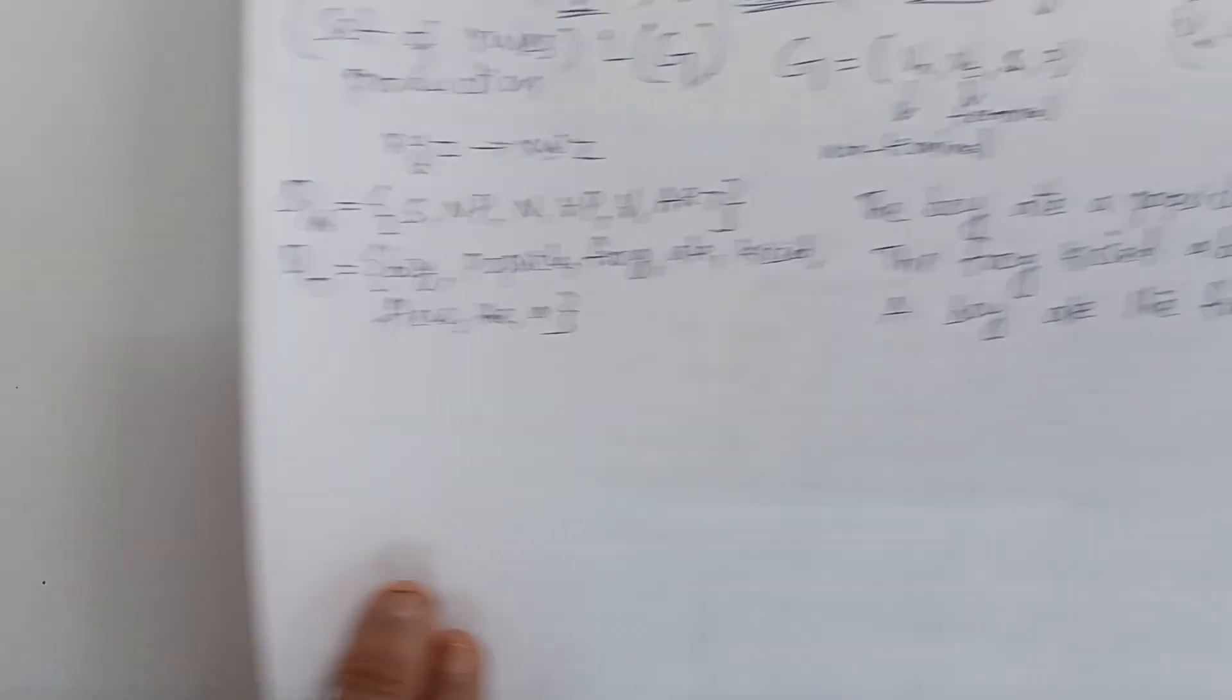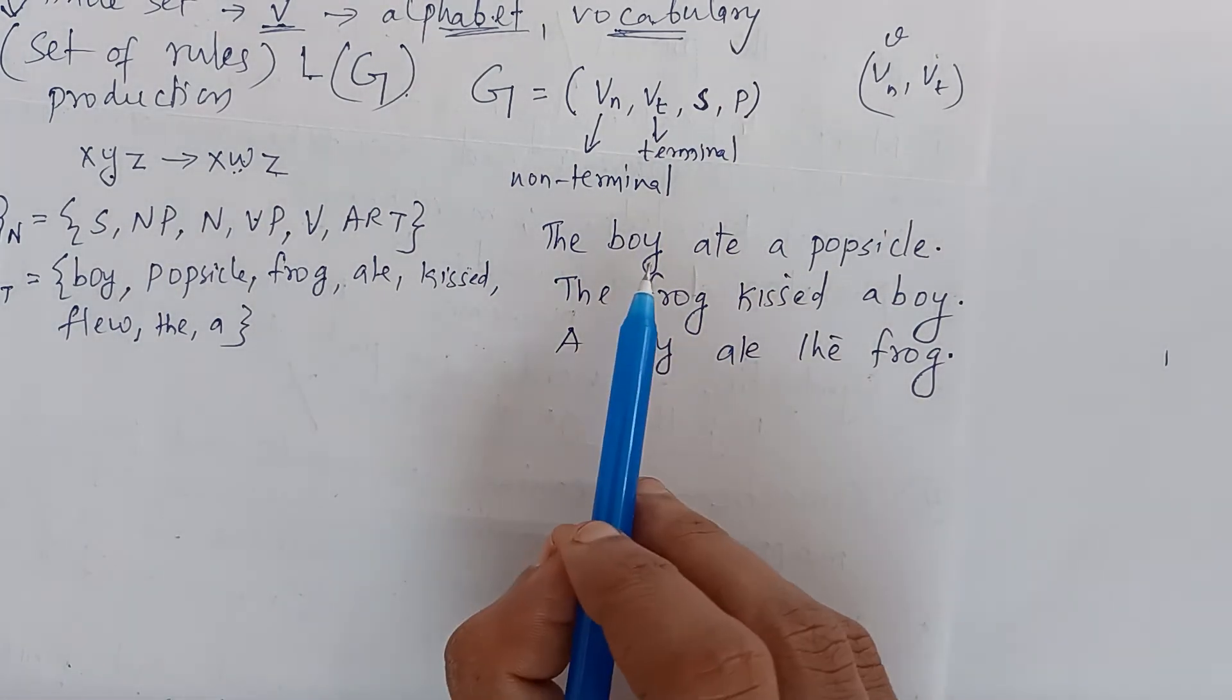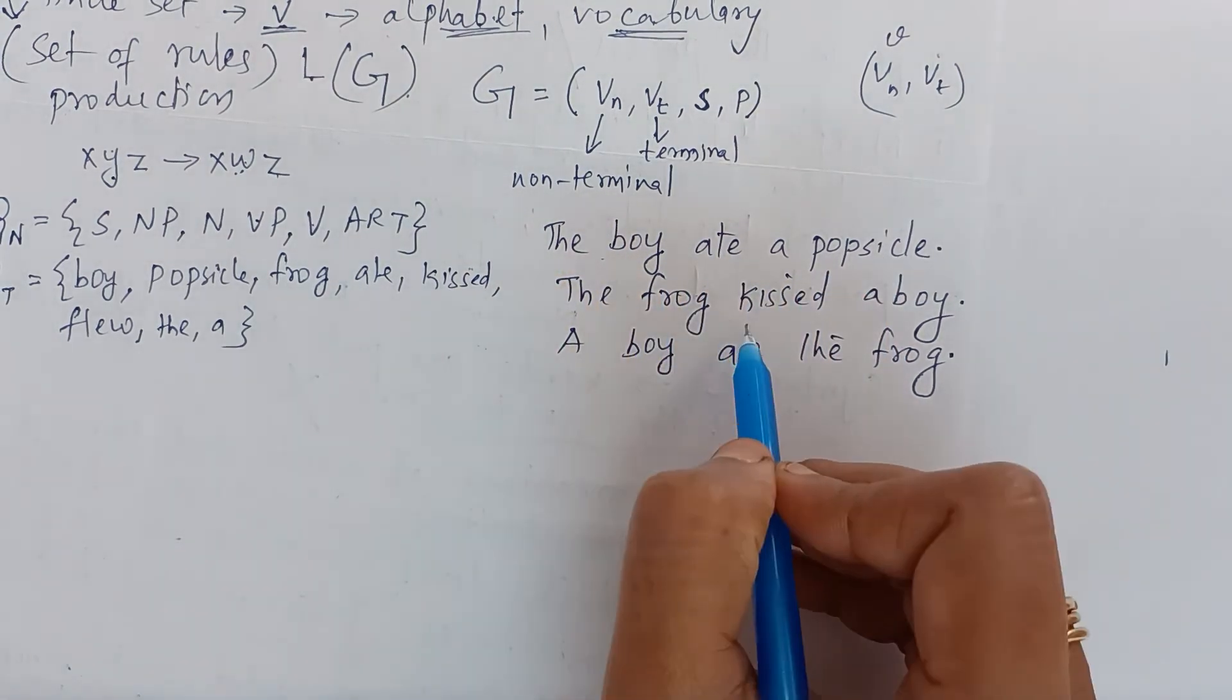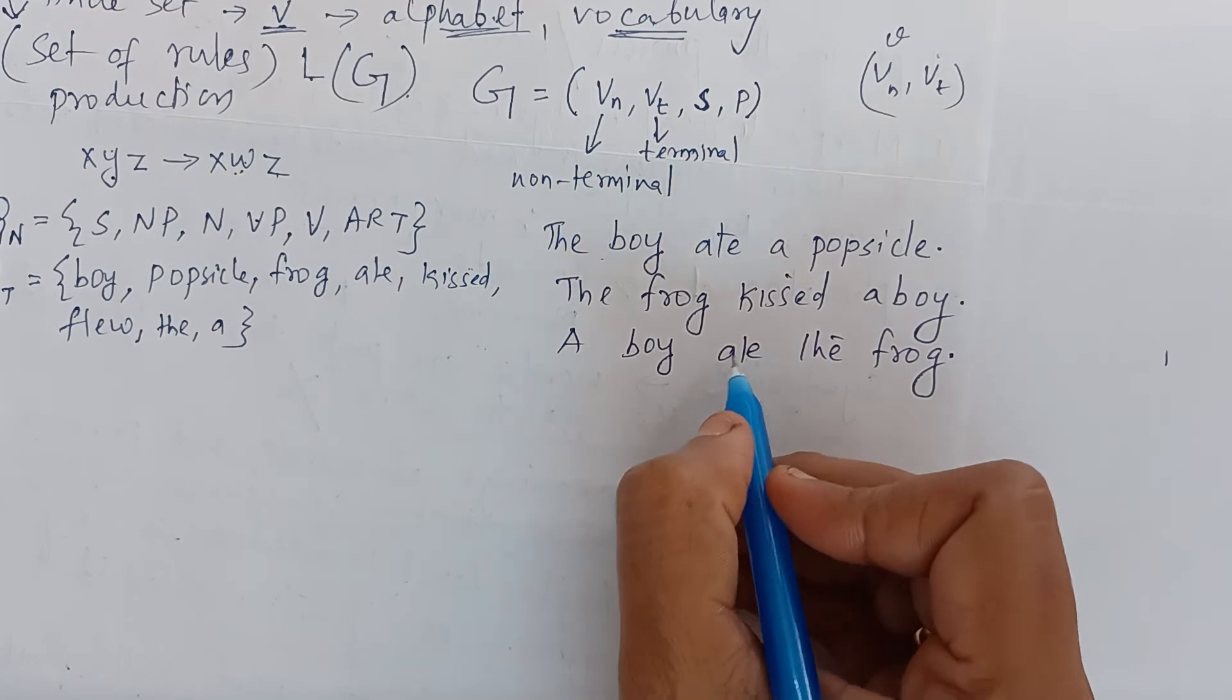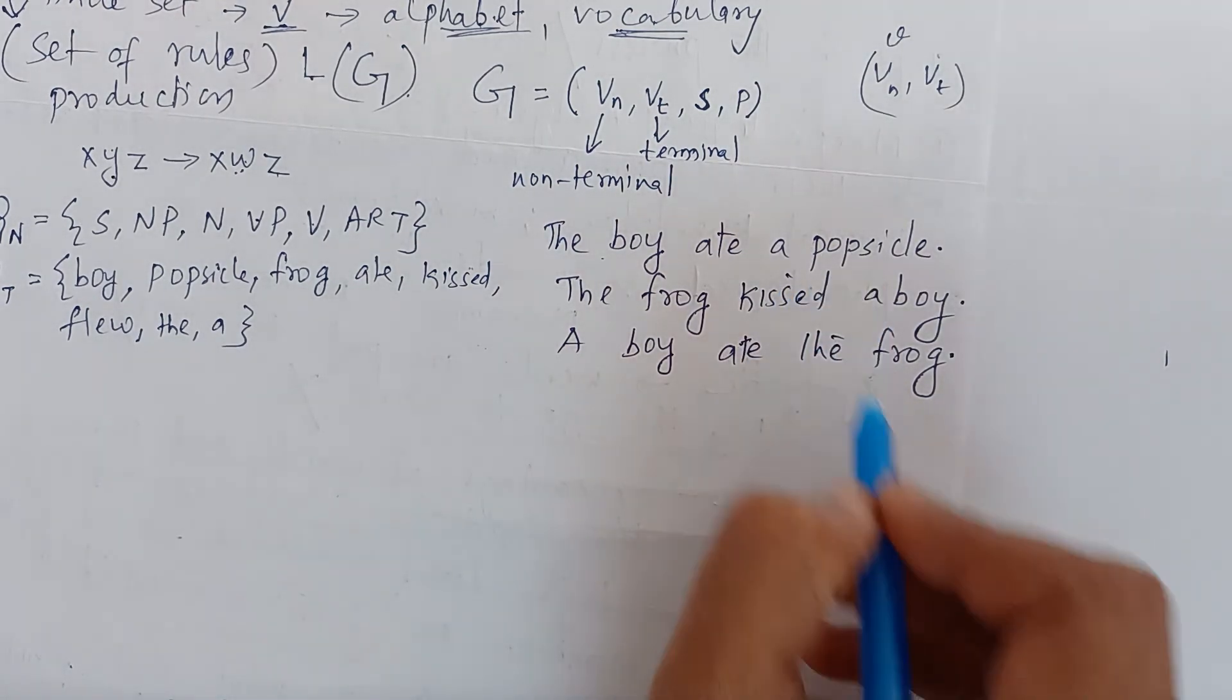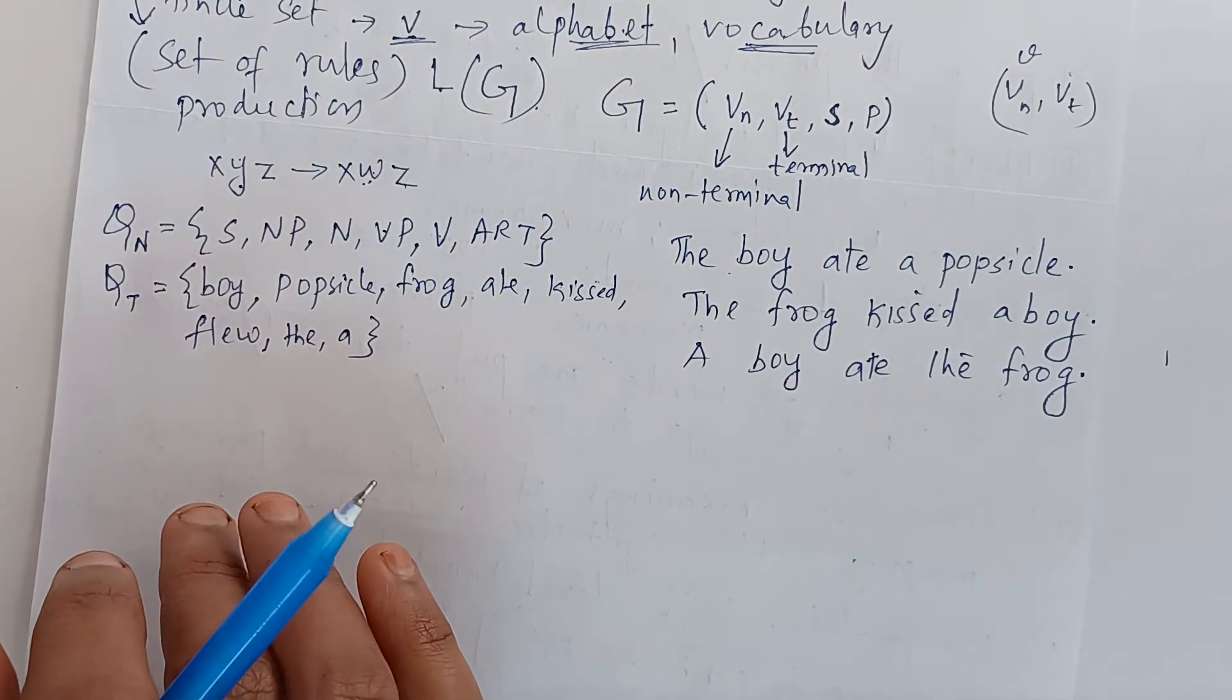Here we are going to have some set of examples. There are three sentences: The boy ate a popsicle. The frog kissed a boy. The boy ate the frog. These are the three sentences.